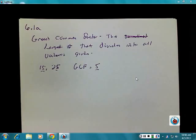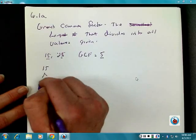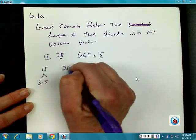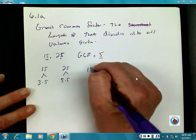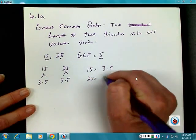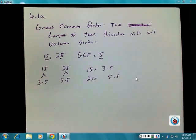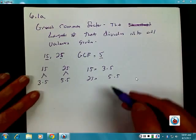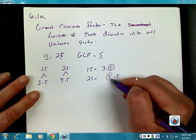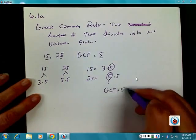We get five out of this because five goes into each evenly. If I take 15 and break it to its prime factorization of 3 times 5, and 25 as 5 times 5, I circle the things they have in common. The 3 is not in common with 25, but this 5 is in common to both — so that's where I get the greatest common factor of 5.